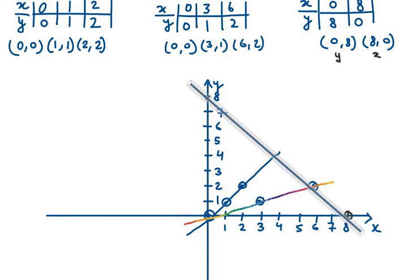Now we can see three triangles formed. However, the top triangle only contains the first and third lines, and the bottom triangle only contains the second and third lines. The only triangle that includes all three equations is the middle one — that is our answer.